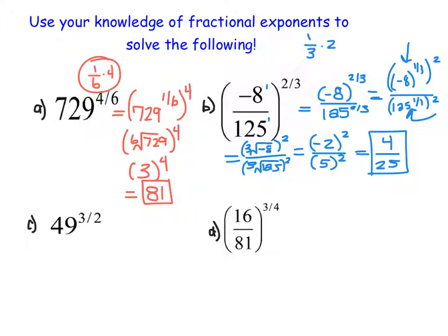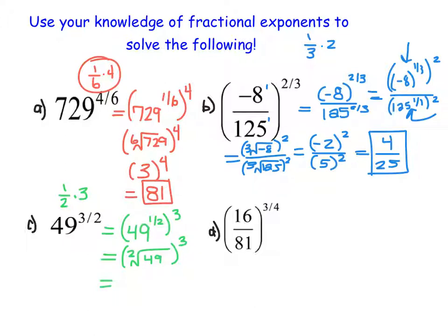Looking at example C, I see I have 3 over 2, so I can rewrite that as 1 half times 3. This becomes 49 to the power of 1 half, all raised to the power of 3. Rewriting this as a root, it's the square root of 49 raised to the power of 3. The square root of 49 is 7, so we have 7 raised to the power of 3. Utilizing my powers resource, I find 343.